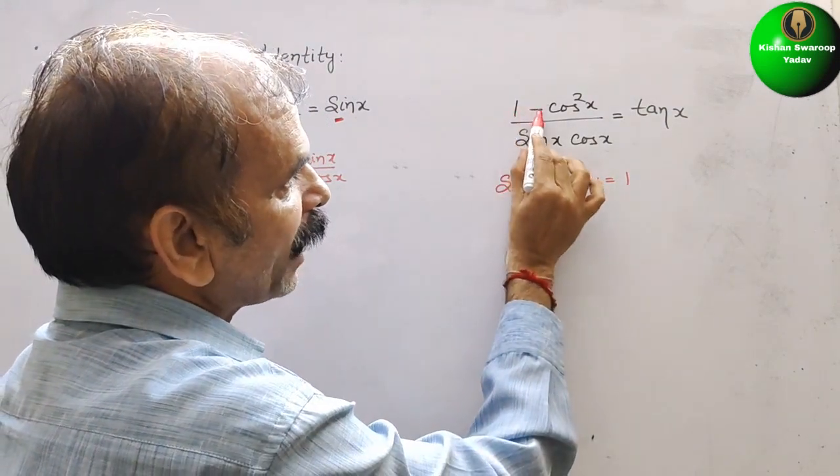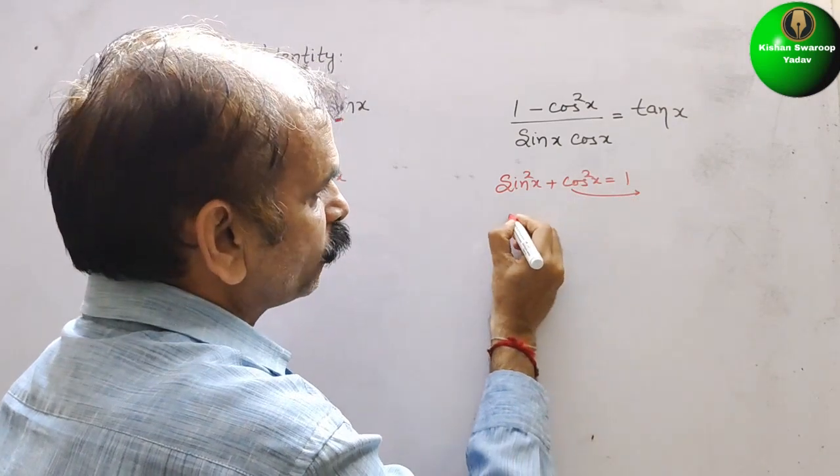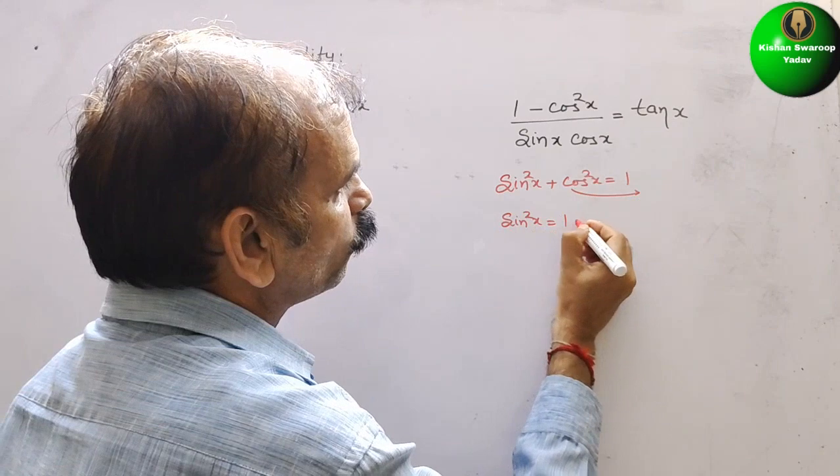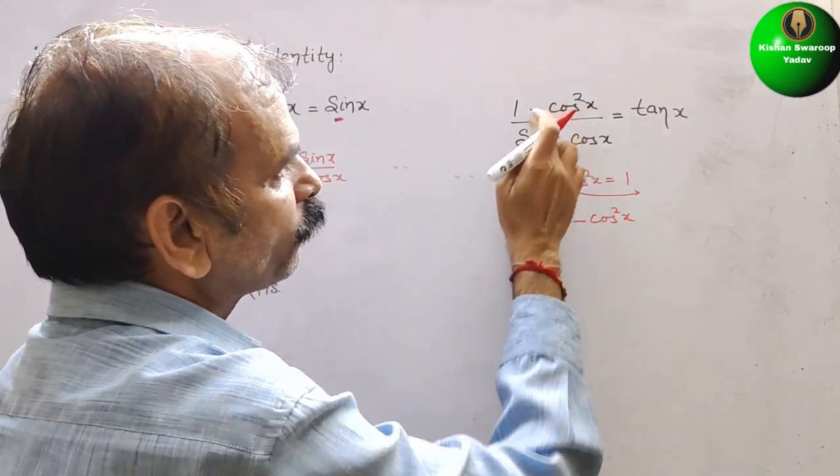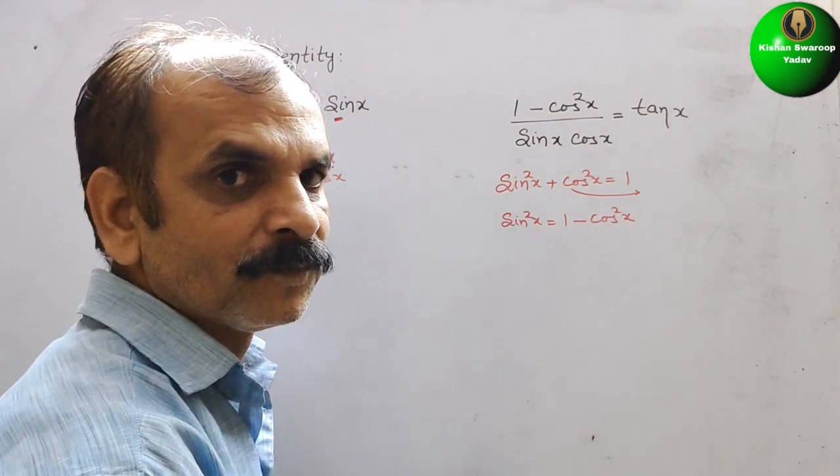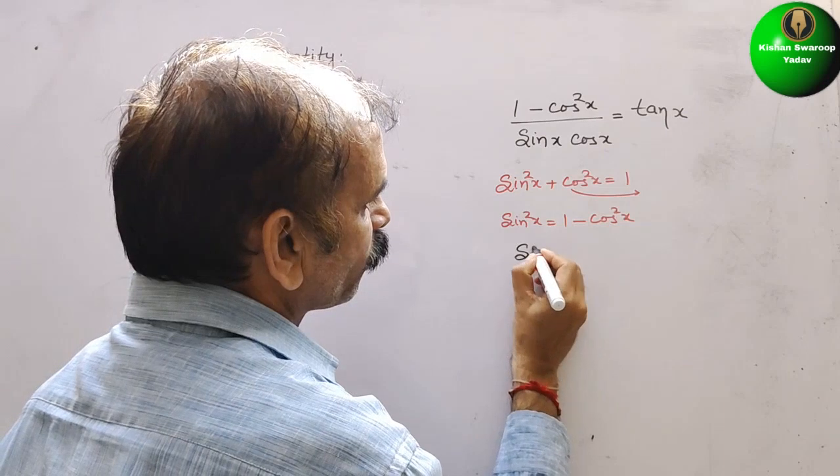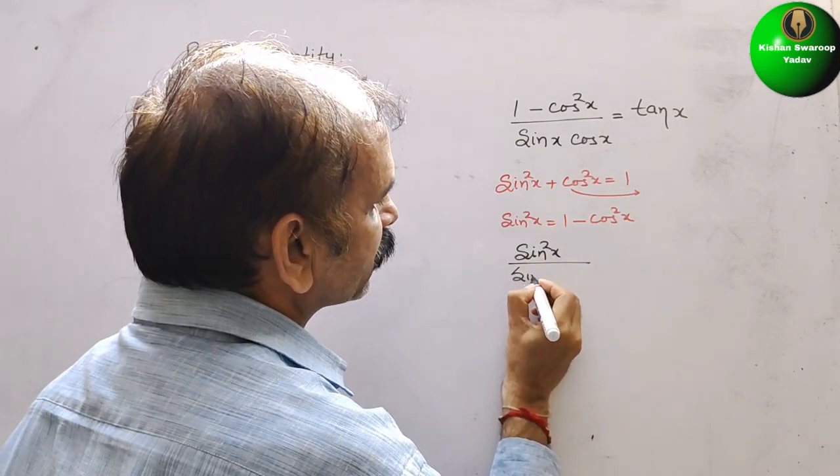So here they have given 1 minus cos square. That means they have brought this to this side. So here you will get sin square x is equal to 1 minus cos square x. That only we have to write here. So now it will be sin square x by sin x cos x.